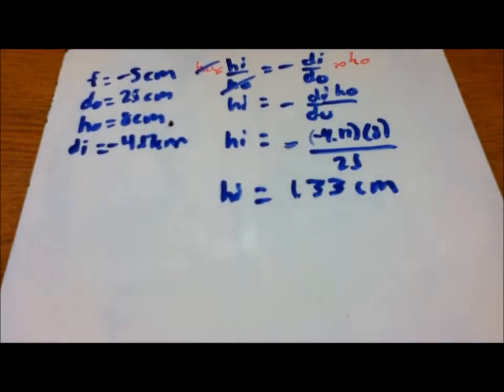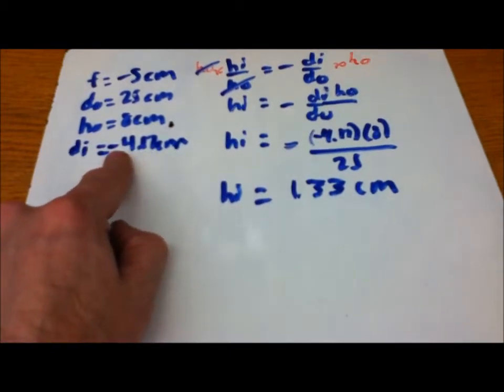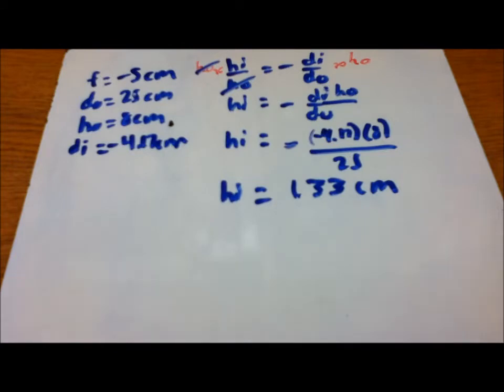Question c asks, is the image real or virtual? Well, it's virtual because di has a negative value, and is the image inverted or upright?